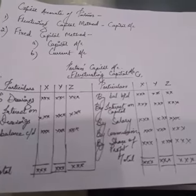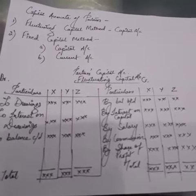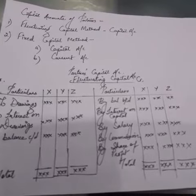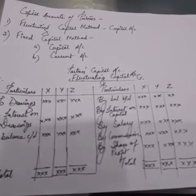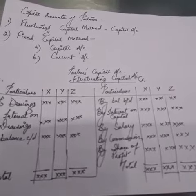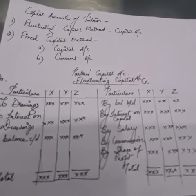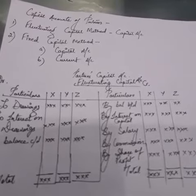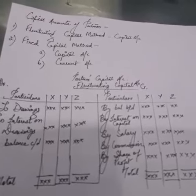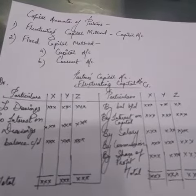Under the fluctuating capital method, only the partner's capital account is maintained. All entries related to interest on capital, salary, commission, share of profit, drawings, and interest on drawings are all reflected in the partner's capital account, because no separate current account exists under the fluctuating capital method.